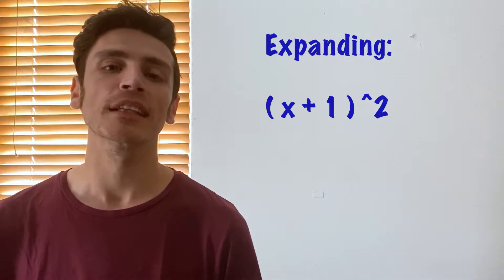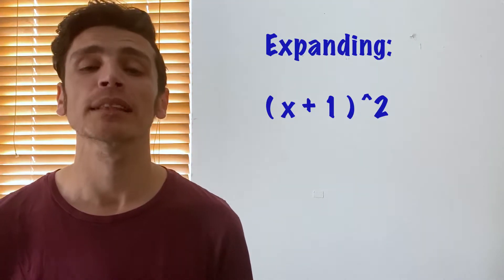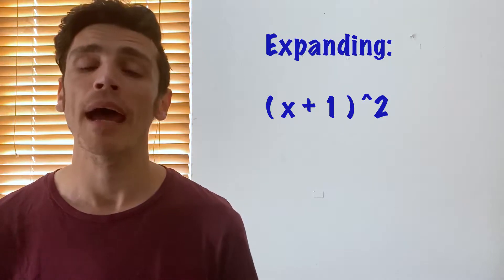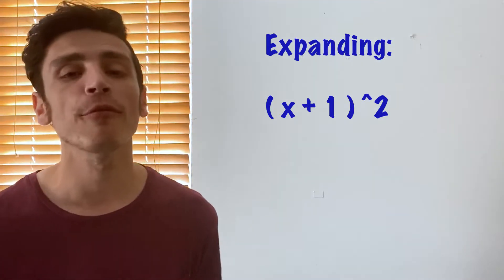Distributive law is a multiplication technique that we use when we're dealing with brackets, and it's really helpful when we're using algebra — so when we have our x's, for example. Today the problem we're going to be solving is the bracket of x plus 1 to the power of 2. But before we tackle that, we're going to use distributive law to solve a bracket multiplication that has no variables in it — so no x's at the moment.